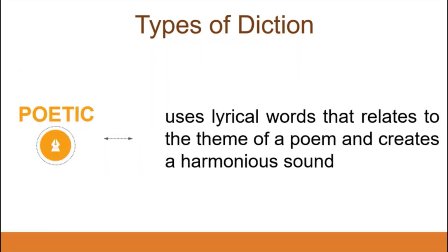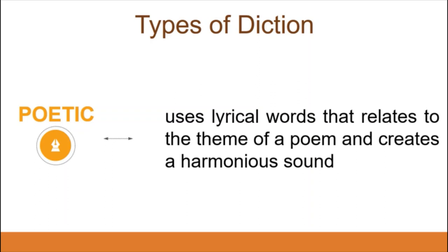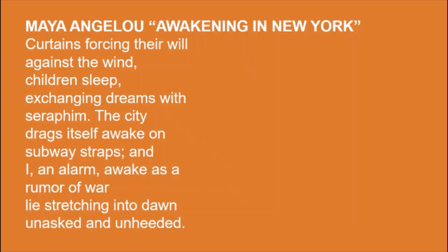Next, poetic diction. It uses words that relate to the theme of a poem and creates a harmonious sound. It involves the use of descriptive language and figures of speech, as well as rhymes and rhythm. Let's read this poem called Awakening in New York by Maya Angelou: 'Curtains forcing their will against the wind, children asleep, exchanging dreams with Seraphim. The city drags itself awake on subway straps, and I, unalarmed, awake as a rumor of war, lies stretching into dawn, unasked and unheeded.' This poem uses poetic diction because of the detailed description of what is happening to the persona. It uses descriptive language, one of the characteristics of a poem. Just by reading it, there is already a harmonious sound because of the words used.